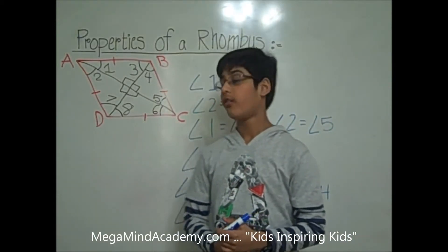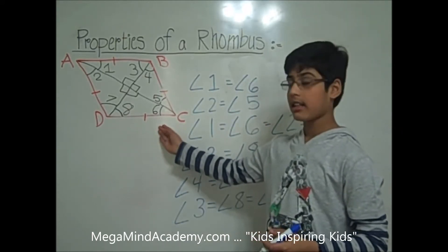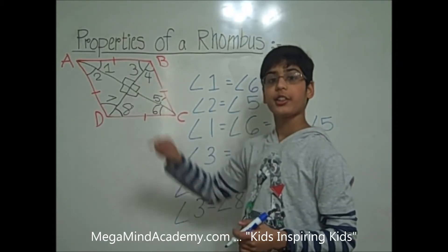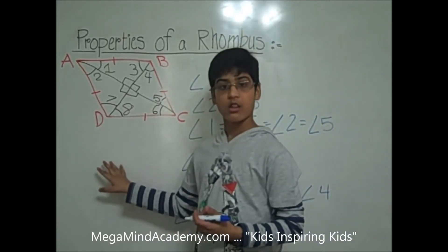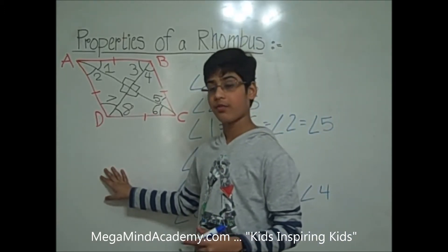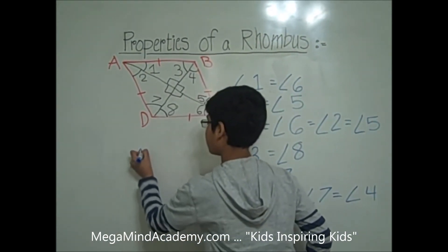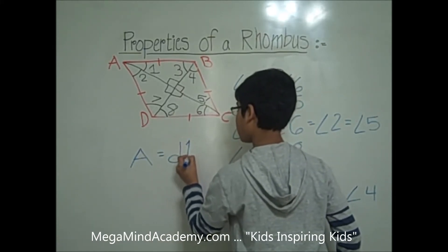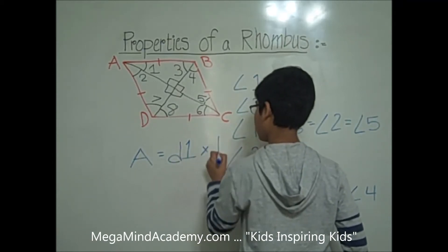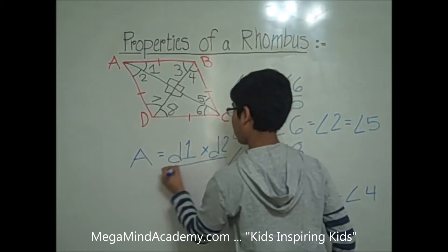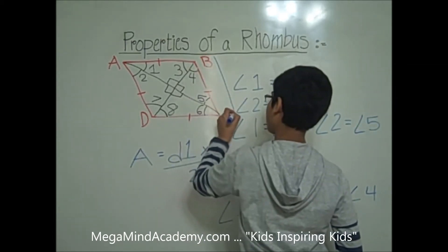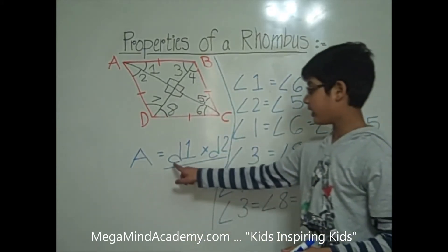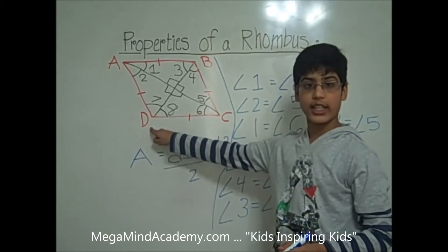The way to find the area of this rhombus is diagonal 1 times diagonal 2 over 2. Area A equals diagonal 1 times diagonal 2 over 2. Note that D here stands for diagonal, not the vertex angle.